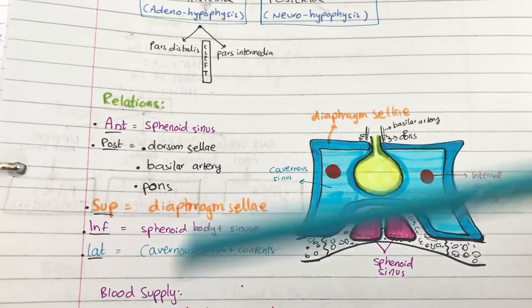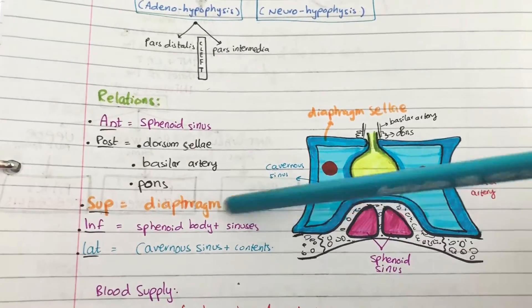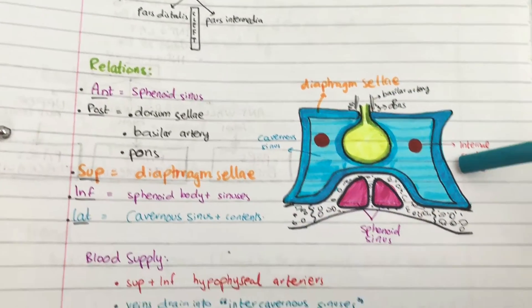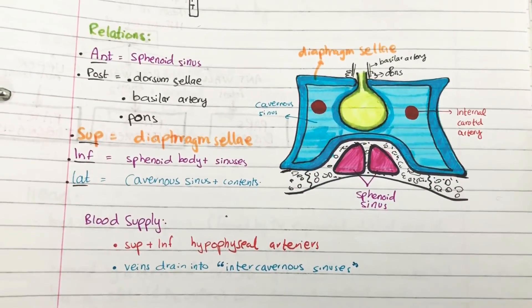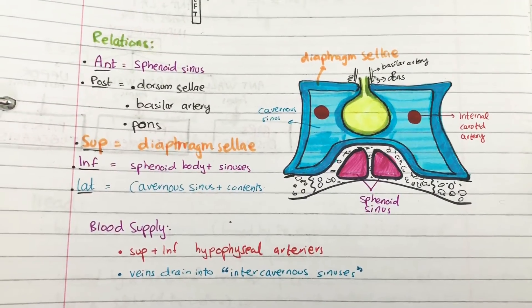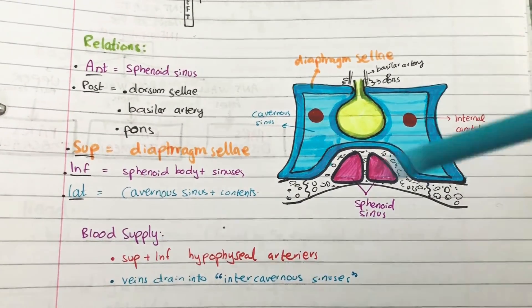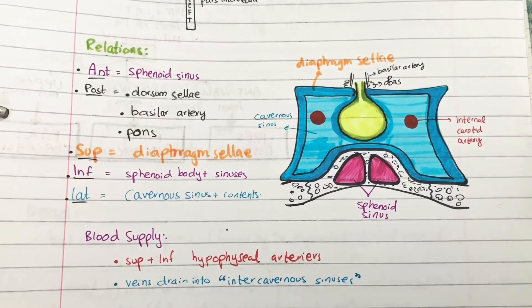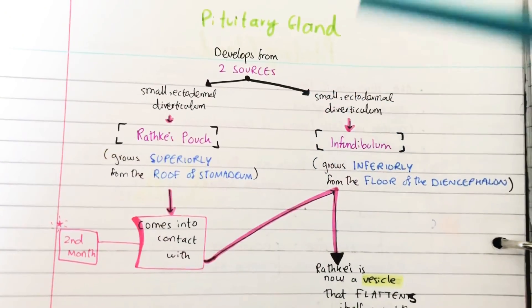The blood supply of the pituitary gland are the superior and inferior hypophysial arteries and the veins drain into the cavernous sinus.